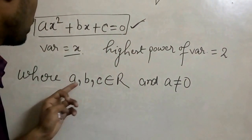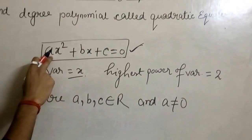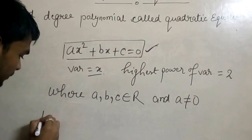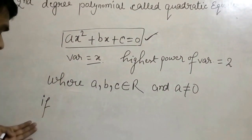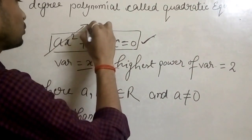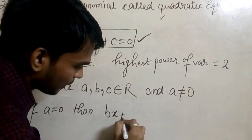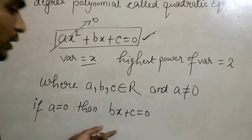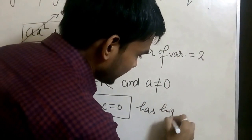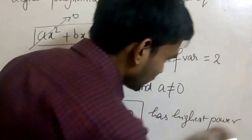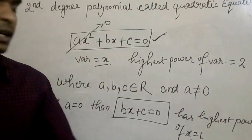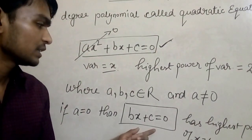Here a, b, c are the coefficients: a is the coefficient of x², b is the coefficient of x, and c is the constant in this equation, all belonging to real numbers. And a is not equal to 0. Why? Because if a equals 0, then the x² term equals 0, and we get bx + c = 0. That equation has highest power of x equal to 1, so it is not a quadratic equation — it is a simple straight line of degree 1.